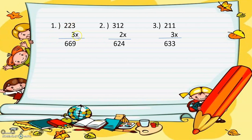Another example: 223 times 3. So 3 times 3 equals 9, 3 times 2 equals 6, 3 times 2 equals 6 — so the answer is 669.